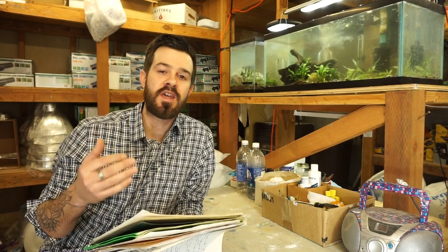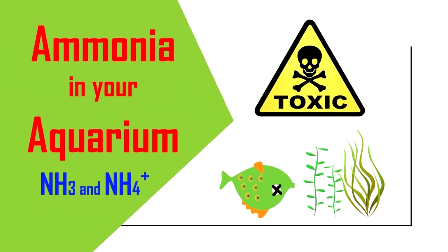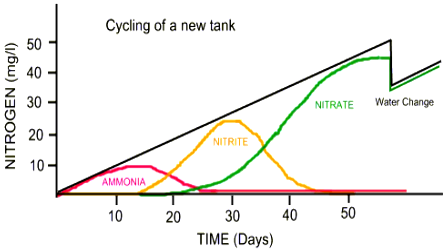Without this process, it would be impossible to keep inhabitants in our aquariums, as ammonia is highly toxic in even small quantities. Nitrates are not toxic to most freshwater fish, except in high amounts with long exposure.